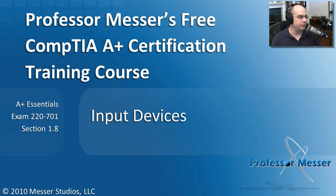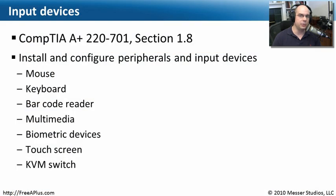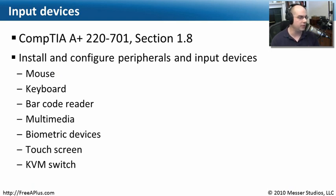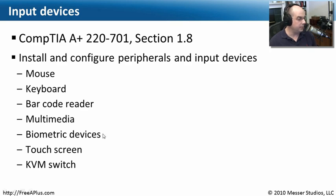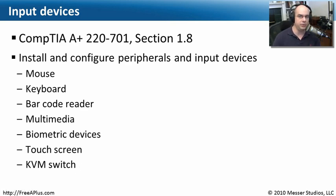Welcome to this module of Professor Messer's Free CompTIA A Plus Certification Training Course on Input Devices. I'm James Messer. In this module, we're going to go through the requirements from our Essentials Exam 220-701, Section 1.8, where we need to install and configure peripherals and input devices. We'll look at everything from a mouse and keyboard to newer input devices like biometric devices and touchscreens, and also learn about how to use a KVM switch.